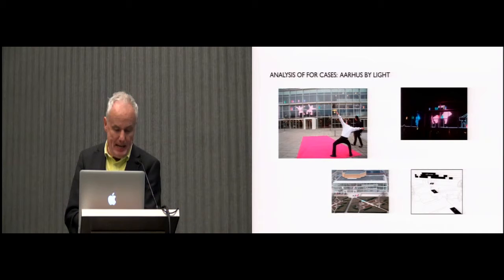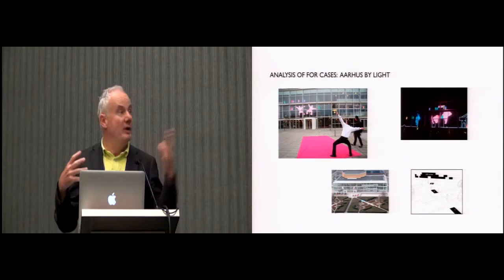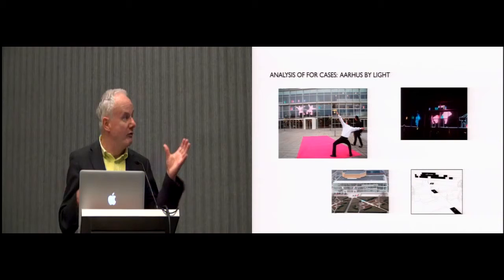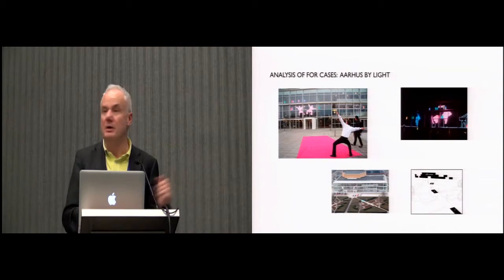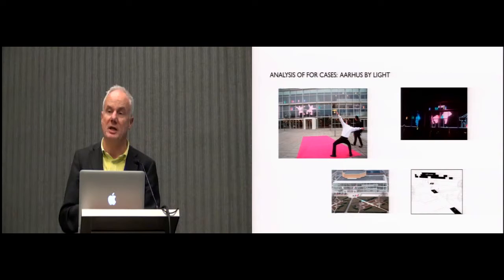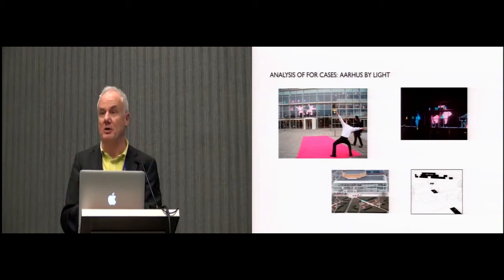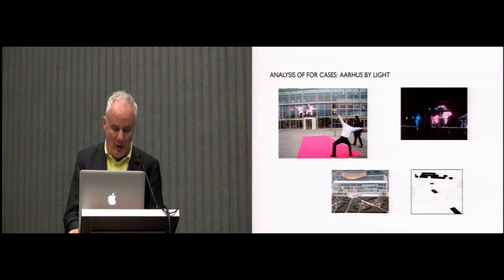Aarhus by Light was a quite different urban installation, composed of a media architecture installation. The building shown is our city music hall, where more than 880 square meters of LED panels were integrated. In front of the building, there is a little park with access areas, and in three locations people could interact with the installation. Basically, people were recorded using a camera and appeared as a silhouette on the facade, enabling them to play with others or with small creatures inhabiting the facade.